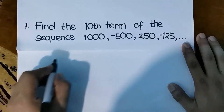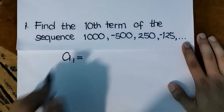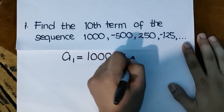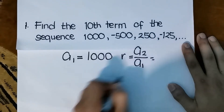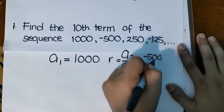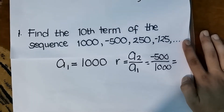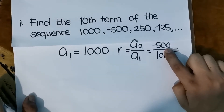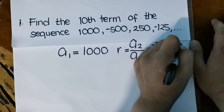We need to identify the values to substitute into our formula. Our first term is 1,000. For the common ratio, r equals a sub 2 over a sub 1, which is negative 500 over 1,000. Both can be divided by 500 — 500 is 1 times 500, and 1,000 is 2 times 500 — so the lowest term is negative 1 half.